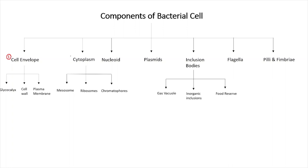Number 1 is the cell envelope. Number 2 is the cytoplasm. Number 3 is the nucleoid. Number 4 are the plasmids. Number 5 are the inclusion bodies. Number 6 is the flagella. And number 7 belongs to pili and fimbriae. Cell envelope can be further divided into 3 components: glycocalyx, cell wall, and plasma membrane. Cytoplasm can also be divided into 3 components: mesosomes, ribosomes, and chromatophores. And inclusion bodies can be divided into gas vacuoles, inorganic inclusions, and food reserve.